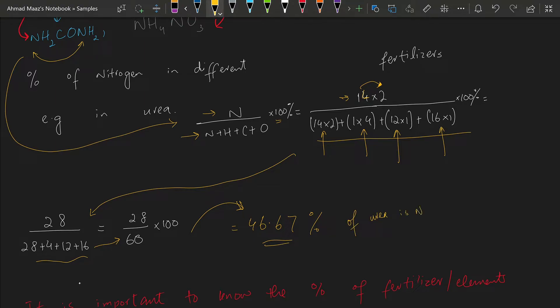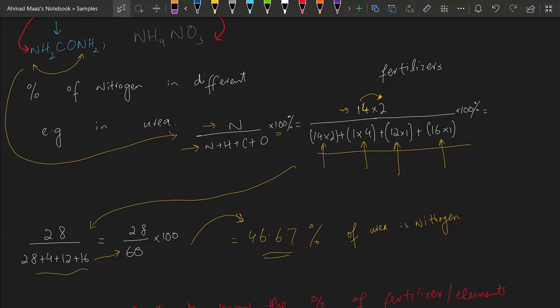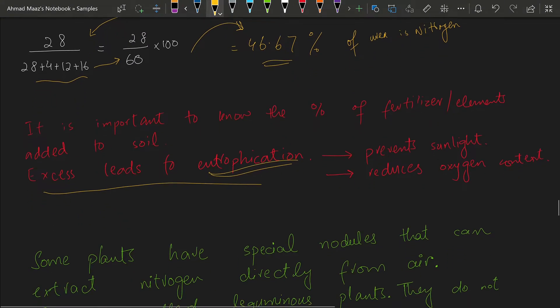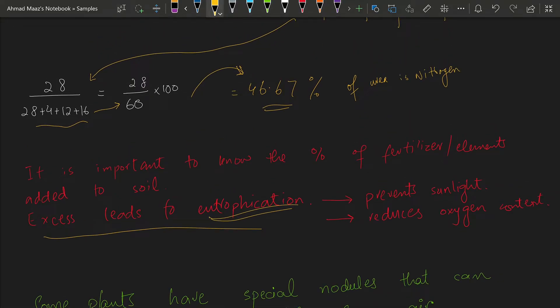We need to know these calculations so that we do not add too little or too much fertilizer. Too much fertilizer is bad for the environment, and too little is not good for the plants. Excess fertilizer leads to an environmental condition called eutrophication.